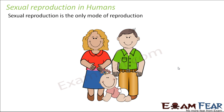That is why in human beings you cannot think of one person giving birth to babies. For giving birth to a baby, a man and a woman — both of them are required. That is why we have very distinct male and female sexes. We will talk about the male and female reproductive organs separately and see how exactly the male and female gametes are produced by the respective reproductive organs.